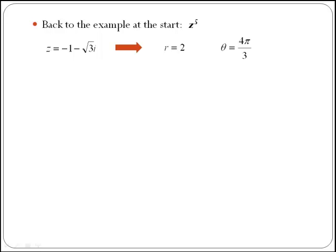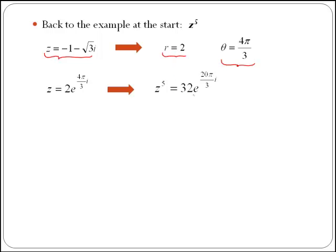Going back to the original example of calculating z to the 5: z was given in Cartesian form as minus 1 minus √3 i. From our previous videos, r equals 2 and θ equals 4π over 3. Writing z in exponential form, we found that z to the 5 is a complex number with modulus 32 and angle 20π over 3.